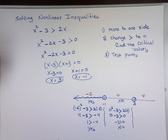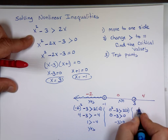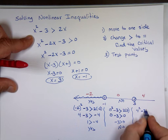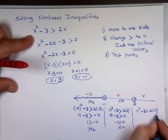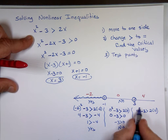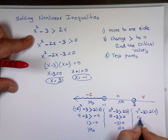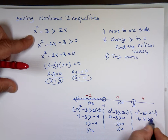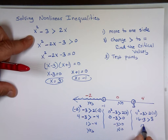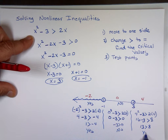Let's try x = 4. Is 4² - 3 bigger than 2 times 4? That's 16 - 3 = 13, and 2(4) = 8. Is 13 bigger than 8? Yes — this region is also a solution.